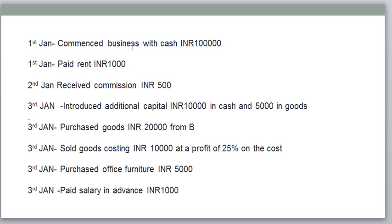First: John started business with cash of one lakh rupees. Second: rent paid 1000. These are all transactions which are expressed in terms of money. Only transactions we can express in terms of money can be recorded in our books. The transactions are already expressed in terms of money, so we need to write them in our books. The primary entry is called a journal.